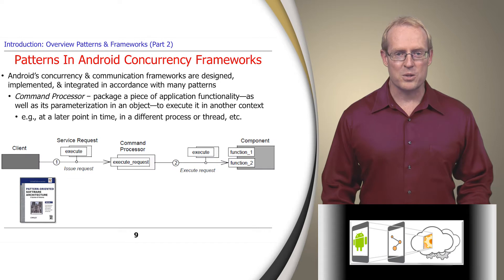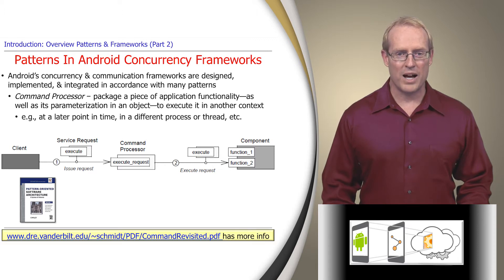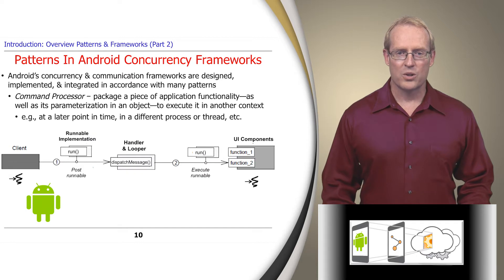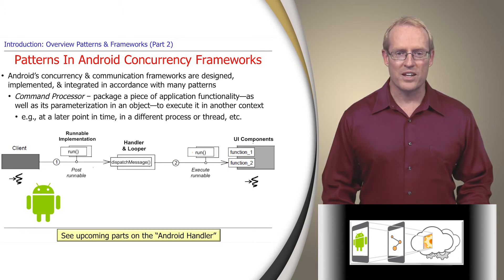The command processor pattern packages a piece of application functionality, as well as its parameterization in an object, to execute in another context, such as a later point in time, in a different process, in a different thread, etc. The Android Handler framework applies this pattern to enable code in a background thread to post a runnable command that's enqueued and processed later in the user interface thread, as described in these upcoming videos.